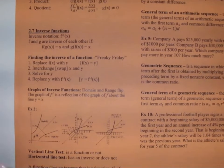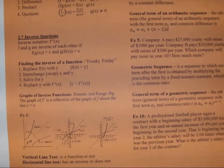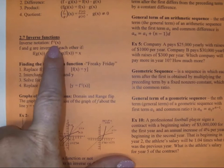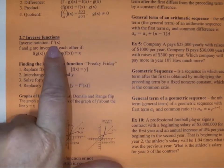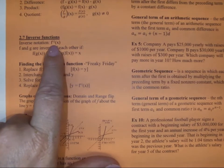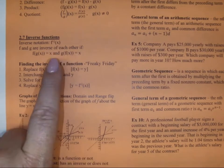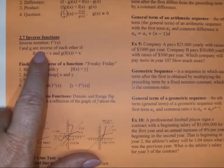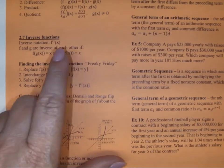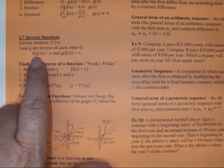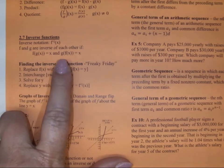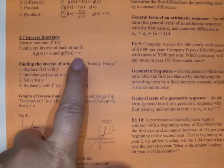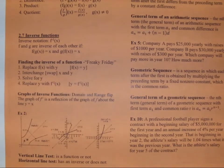We're going to talk about inverse functions. Inverse function notation is f⁻¹(x). f and g are inverses of each other if f(g(x)) equals x and g(f(x)) equals x. So if you take the composition of them, you can figure out if they are inverses of each other.